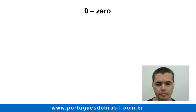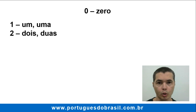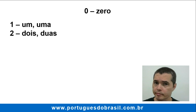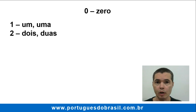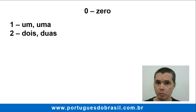Zero. Um, uma. Dois, duas. But why um, uma? Dois, duas? Because in Portuguese, nouns and adjectives have gender, and this rule is also applied to some numbers.